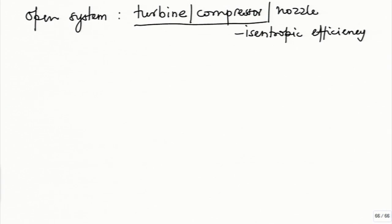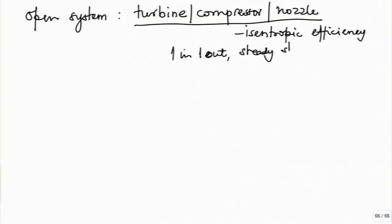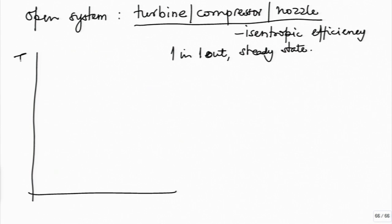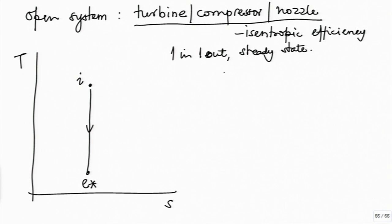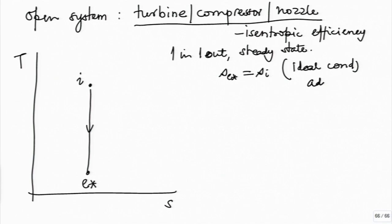Such devices are usually one inlet, one outlet, steady state. From the first law and from the second law, for such a device on a T-S diagram, the entropy of the inlet state and the entropy of the exit state under ideal conditions would be the same. The ideal condition means adiabatic, isentropic, and reversible — hence isentropic.